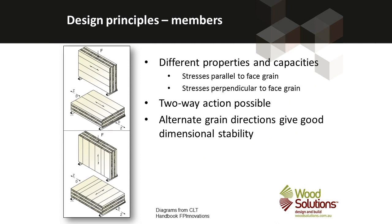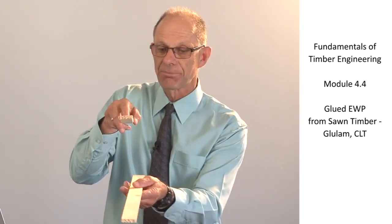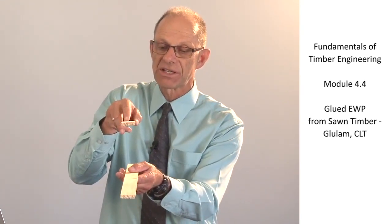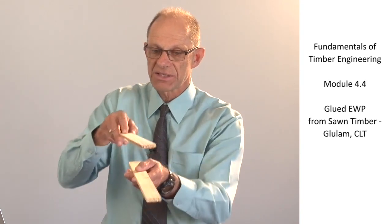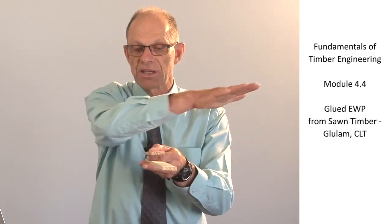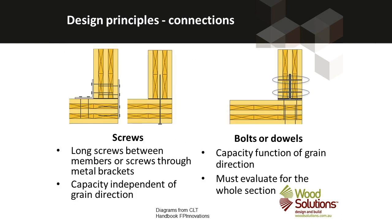There are different properties and capacities in each direction. For a floor slab, the outer laminates — top and bottom — have grain running in the same direction, giving higher capacity in that direction. So spanning in one direction has higher capacity than spanning in the other. It is an orthotropic material, but the difference in the two directions is reduced by the manufacturer. Screws, plates or dowels can be used to connect CLT elements together.